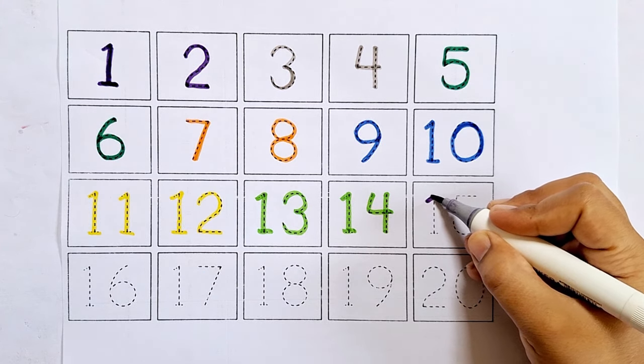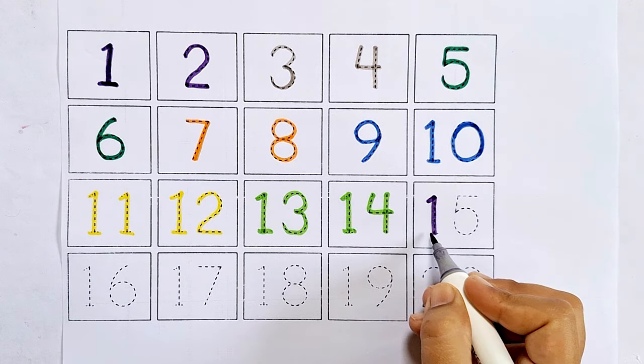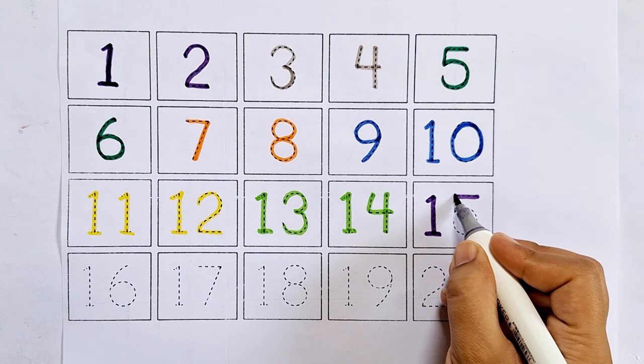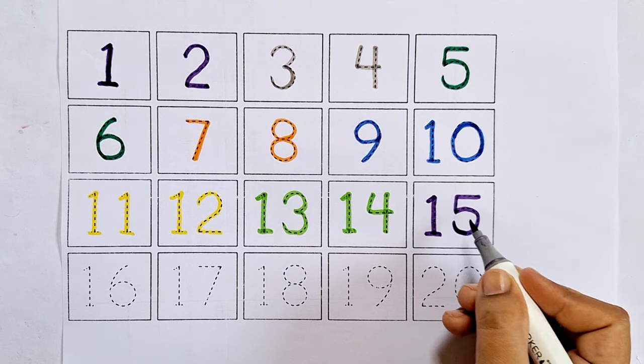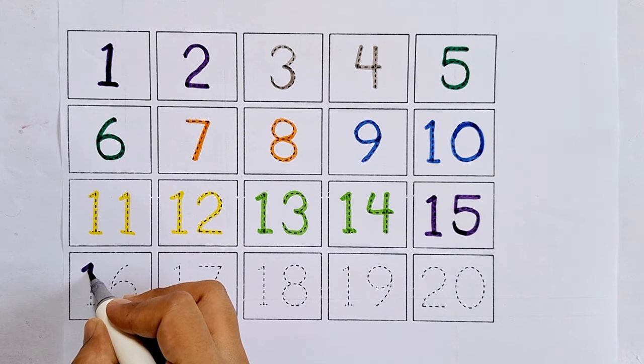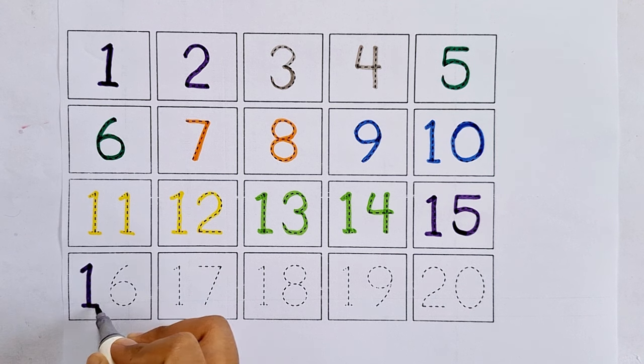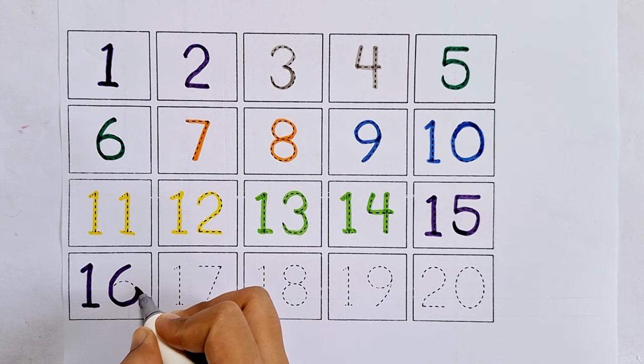Fifteen. One five, fifteen. After fourteen comes fifteen. Sixteen. One six, sixteen. After fifteen comes sixteen.